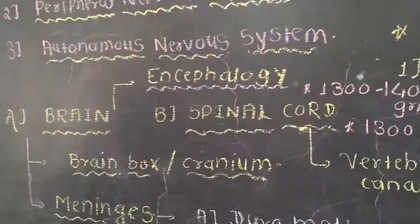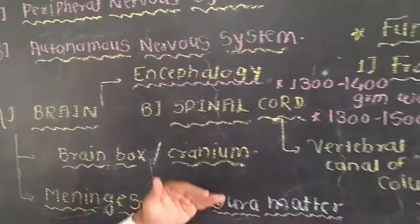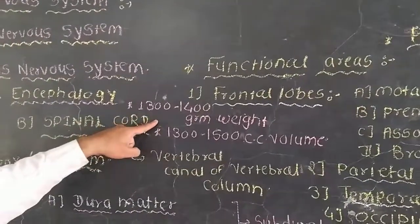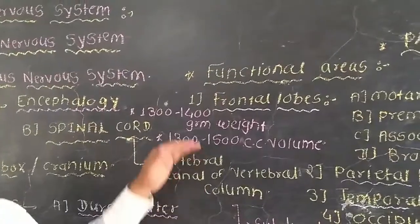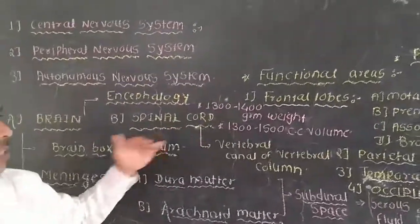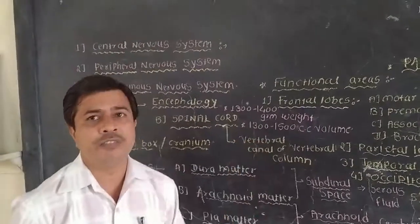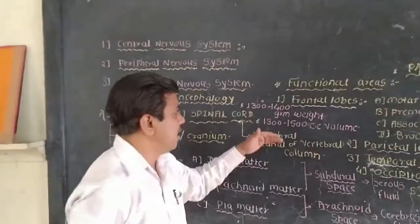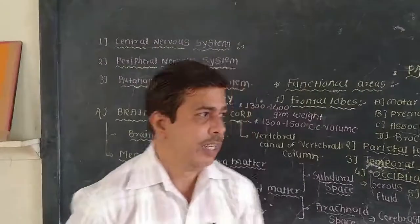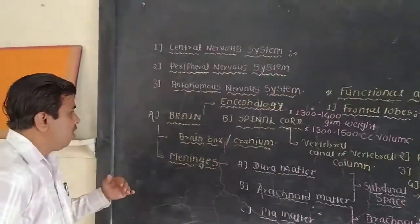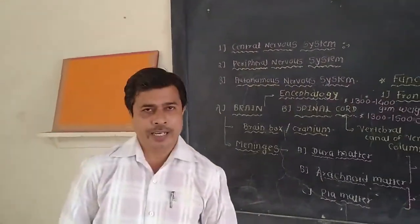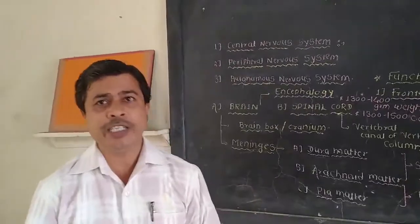The brain is a vital organ. It weighs about 1300 to 1400 grams and has a volume of 1300 to 1500 cc. Because it is a vital organ, its protection is necessary.